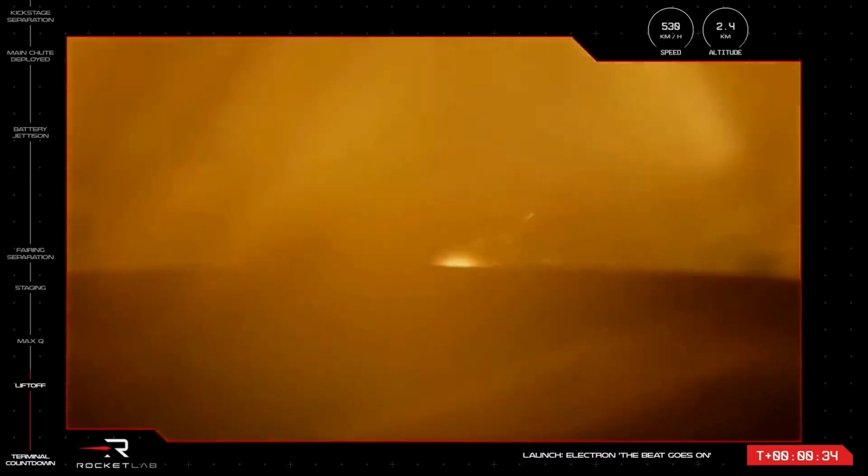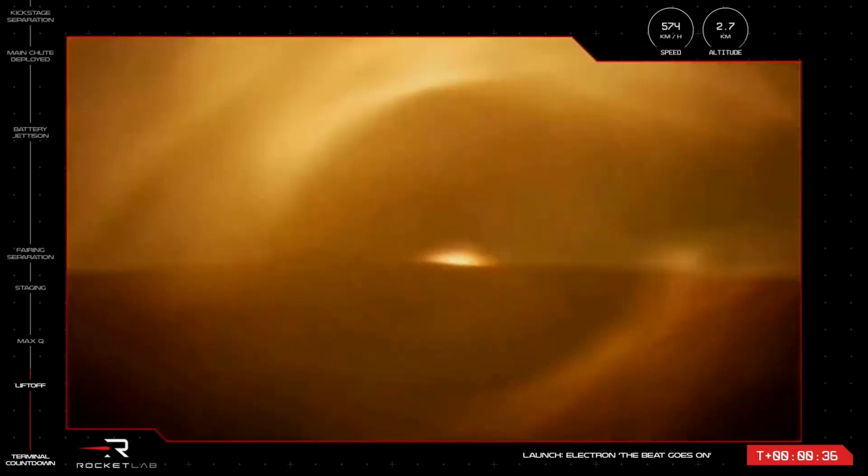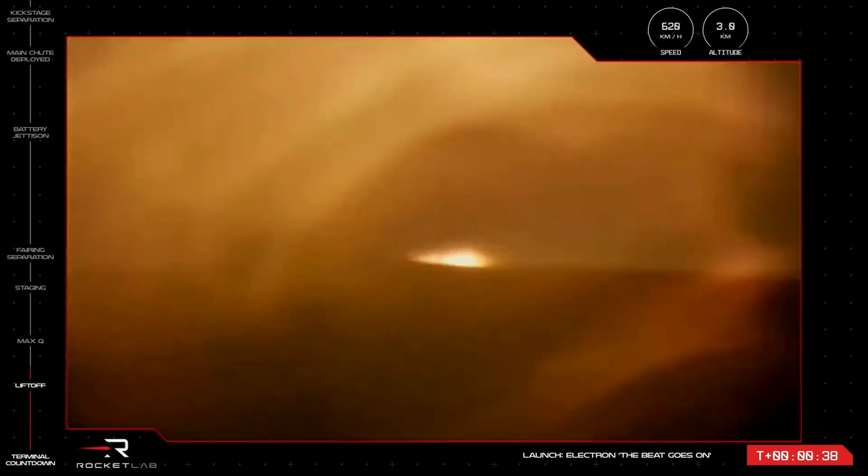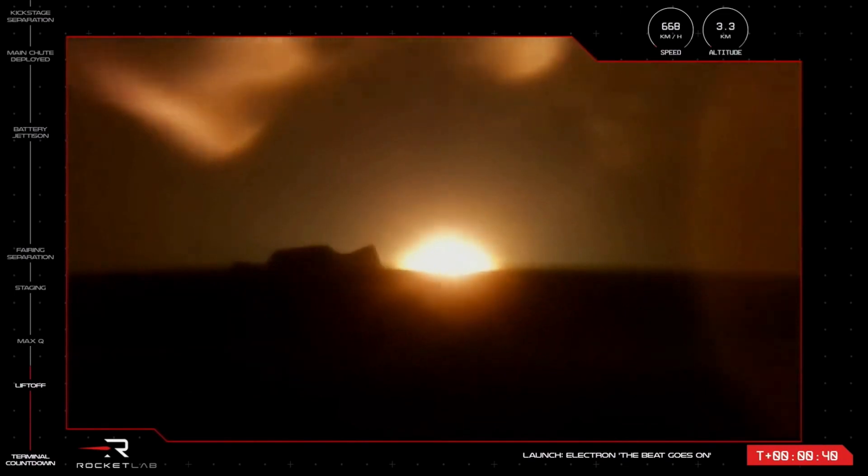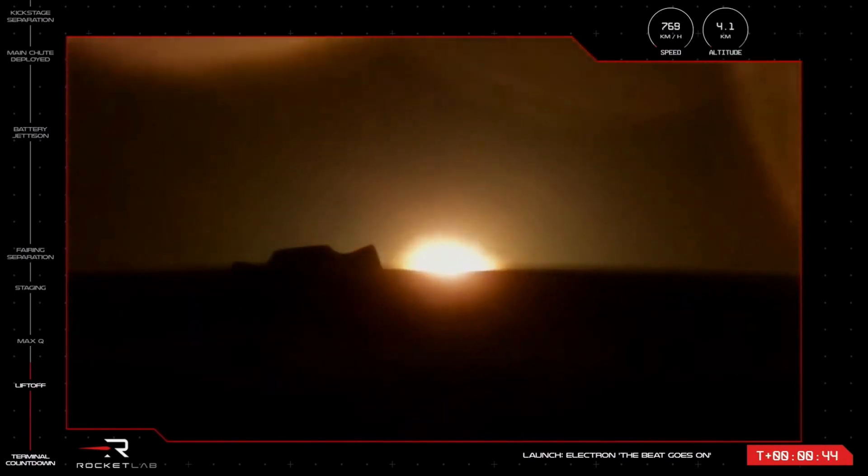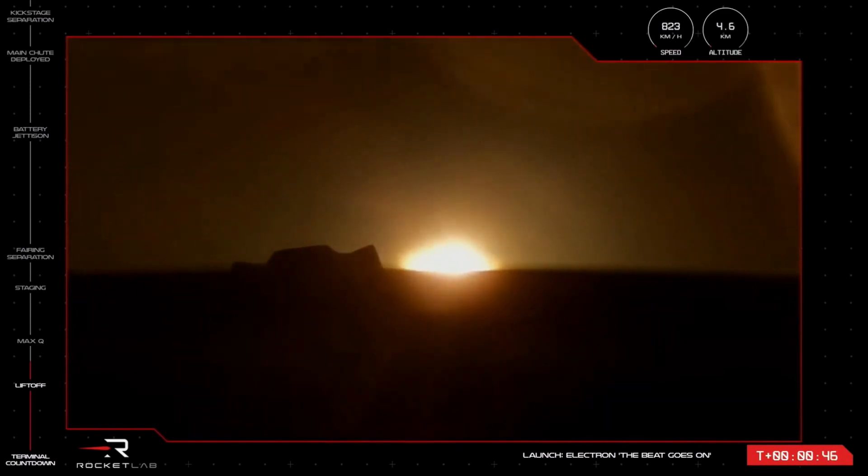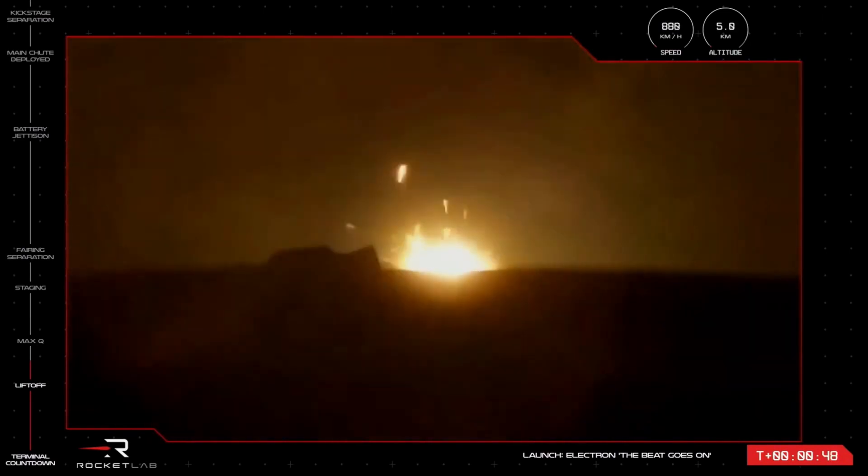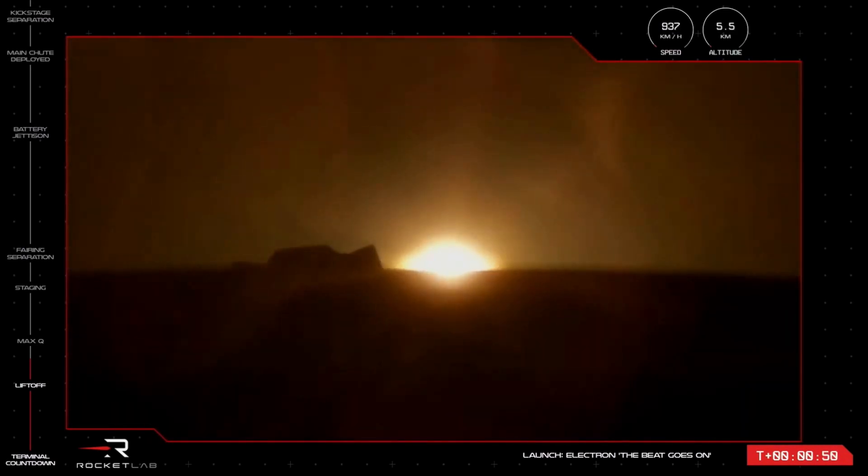T plus 32 seconds and our 35th Electron mission is off the pad and on its way to orbit. The next mission milestone will be Max-Q, when Electron experiences the most amount of mechanical stress as it heads skyward at the intersection of vehicle speed rising and air density dropping.